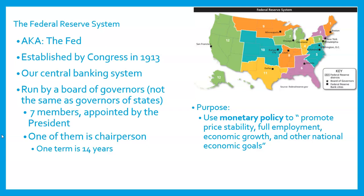What is their purpose? The Federal Reserve uses monetary policy — a key term you might see on the state test. Monetary policy is what the Federal Reserve does, and the main goal is to promote price stability, try to achieve full employment, maintain economic growth, and pursue other national economic goals. That 'promote price stability' piece is talking about trying to fight inflation.